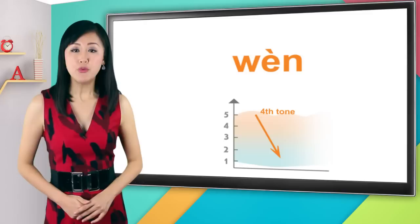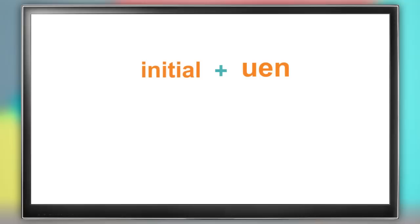When it's used on its own, you change the u to w, making it w-e-n. If you give it a fourth tone, wen, that means to ask, wen.